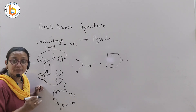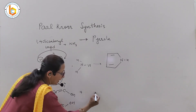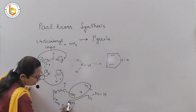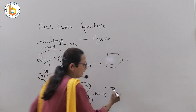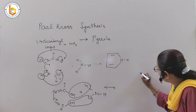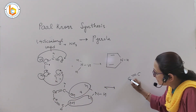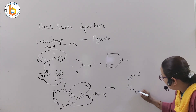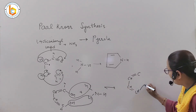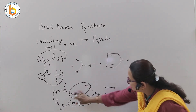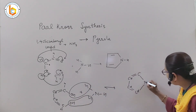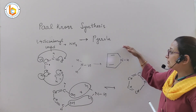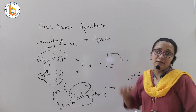Then I react this intermediate with ammonia, NH3. There is a loss of water — loss of water from both ends. What do I get? I get nothing but pyrrole: C=C, single bond C, H, H, double bond C, H, and what remains is N and H. Yes, what I want is pyrrole. This is nothing but the reaction and mechanism of pyrrole synthesis.